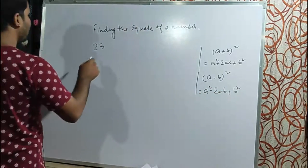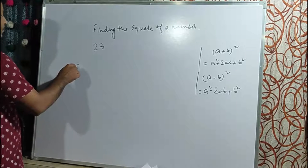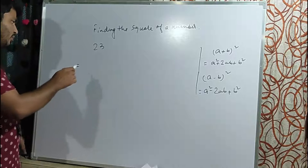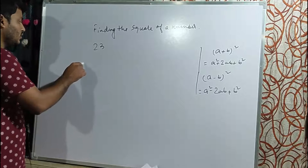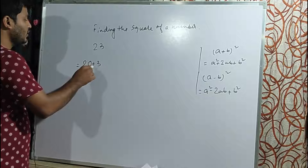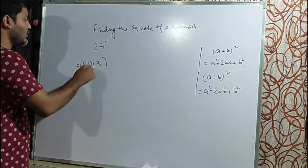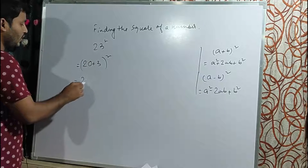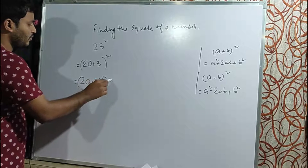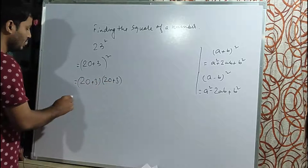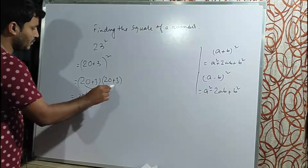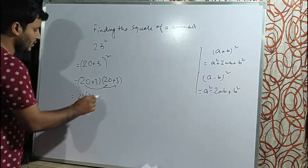For example, to find 23², we use the multiplication formula. We write 23 as 20 + 3. Here, 20 is a and 3 is b. Then we apply 2 times 20 times 3.